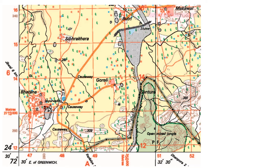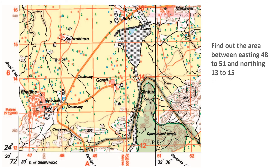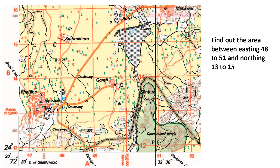Let's try once again with another example. The question is: find out the area between easting 48 to 51 and northing 13 to 15. Where is 48? 48 is here. Where is 51? 51 is here. 13 is here and 15 is there. So let's first mark the area of this region — that is 13 to 15 and then 48 to 51.